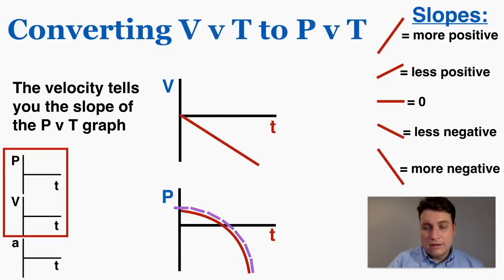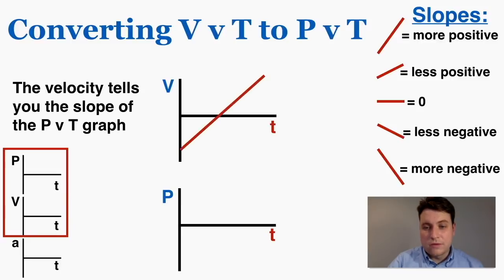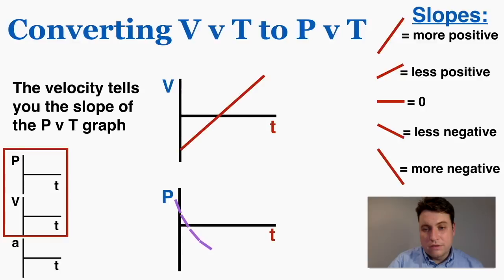Here's a more complicated one. The velocity starts very negative, goes to zero, and then becomes very positive. For the position-time graph, the tangent line starts with a very negative slope and gets smaller and smaller in slope until it reaches zero, then continues to get more and more positive. So that's what that position-time graph would look like.